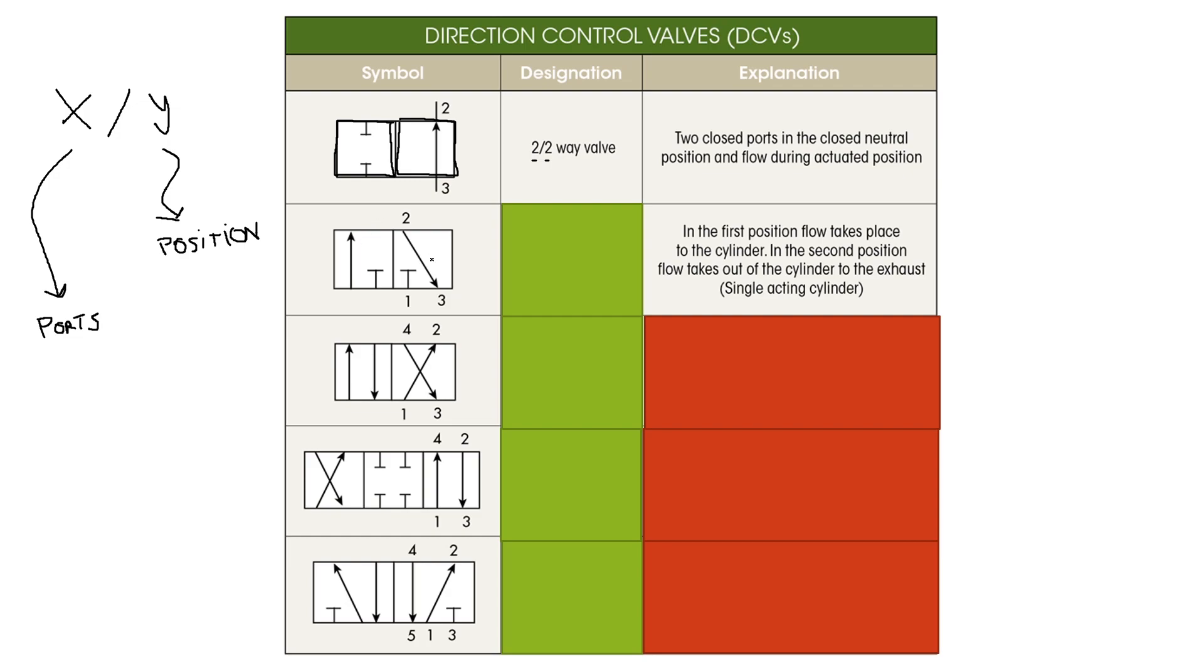In the second position flow takes out of the cylinder to the exhaust. So this kind of DCV is put on single-acting cylinders, cylinders that have only one port. We talked about those cylinders, so only one port. And so we know it has three ports and two positions, making it a 3/2 way valve.